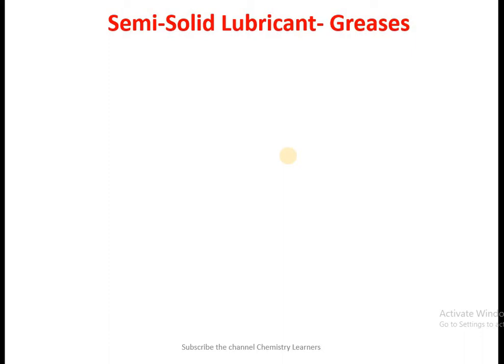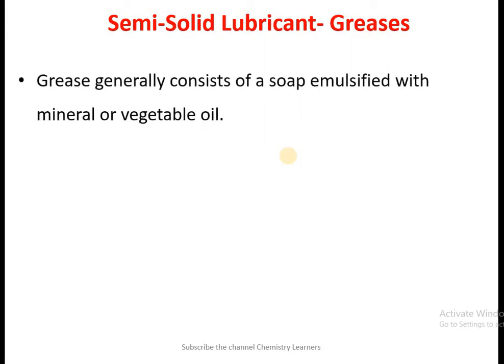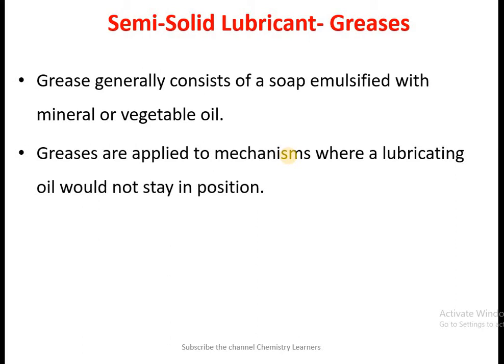Next are semi-solid lubricants, for which we will see the example of greases. We regularly use grease for greasing different machines and pulleys. Greases generally consist of soap emulsified with mineral or vegetable oil. They are applied to mechanisms where lubricating oil would not stay in position — for example, when liquid lubricant gets removed due to a sudden jerk, high speed, or load. In those situations, greases are very useful.